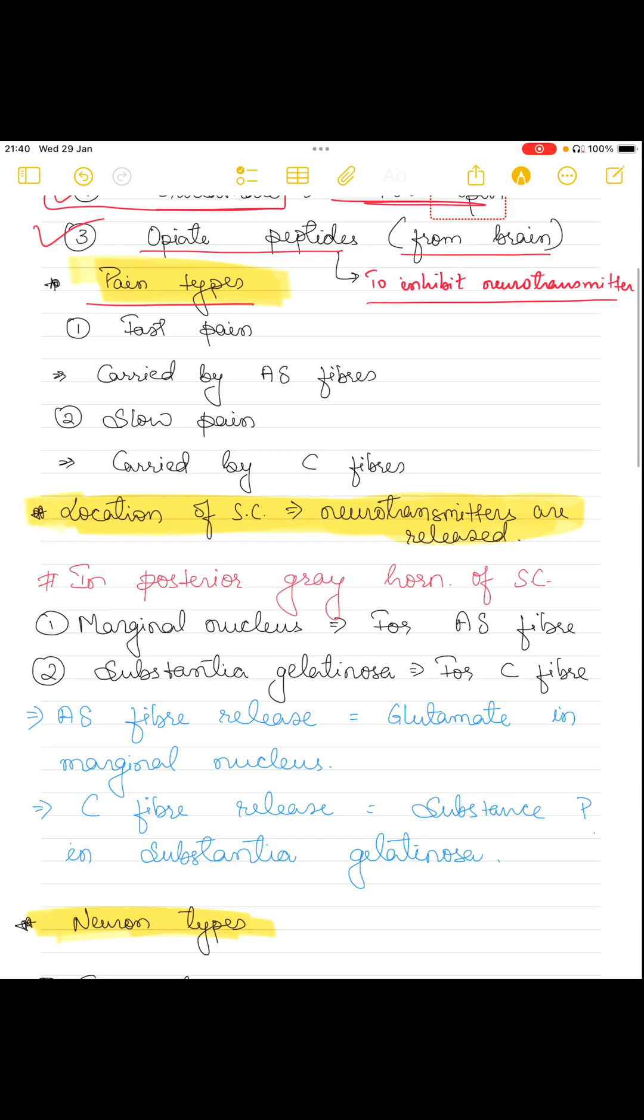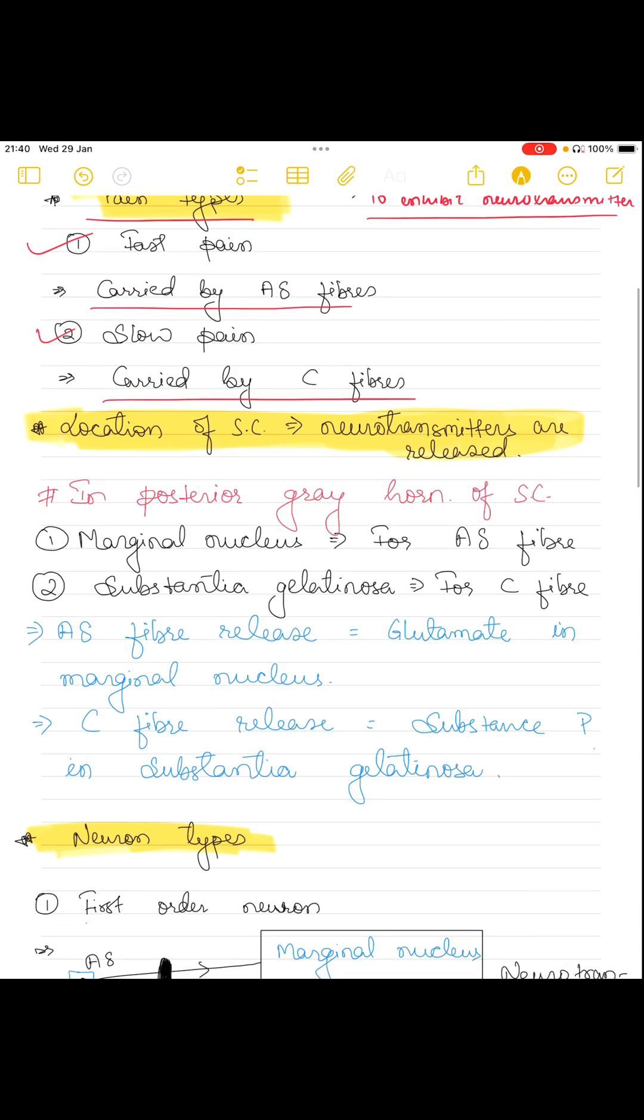Now let's talk about the types of pain. There are two types: fast pain and slow pain. Fast pain is carried by A-delta fiber and slow pain is carried by C fiber.